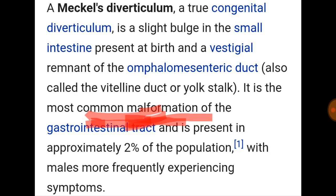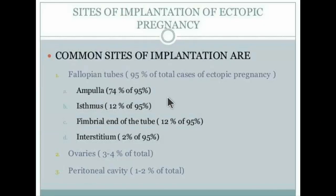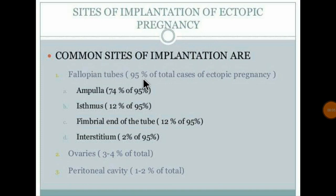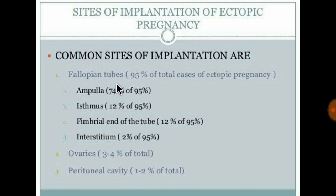Regarding sites of implantation of ectopic pregnancy: fallopian tube accounts for 95%, ovaries 3 to 4%, and peritoneal cavity 1 to 2%. This is easy to remember — peritoneal cavity 1 to 2%, ovaries 3 to 4%, and fallopian tube the majority.